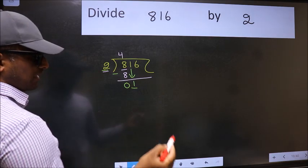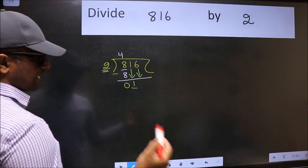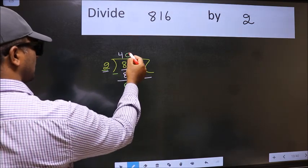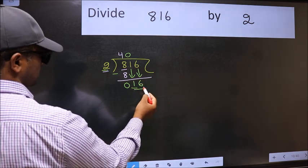So we should bring down the second number. And the rule to bring down the second number is we should put 0 here. Then only we can bring this number down. Now 16.